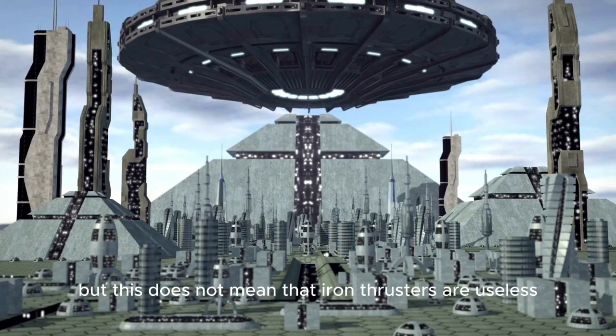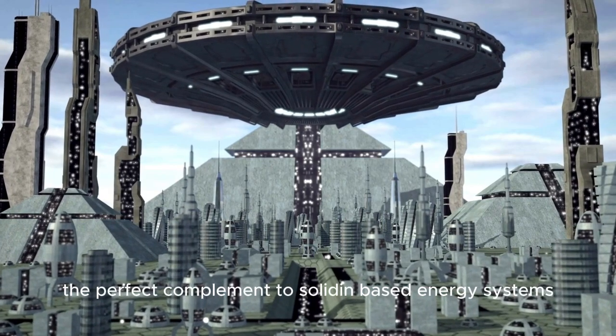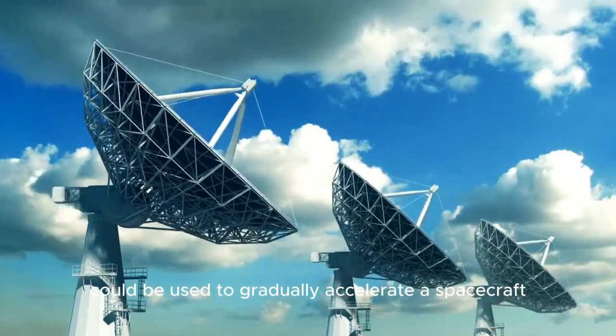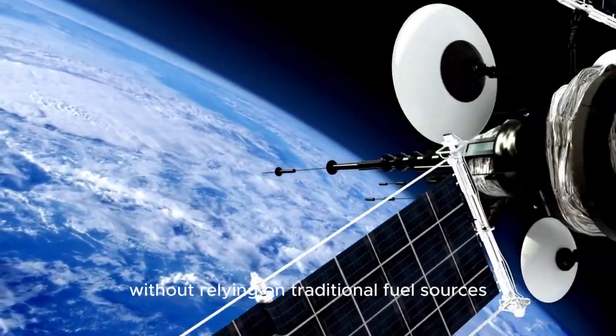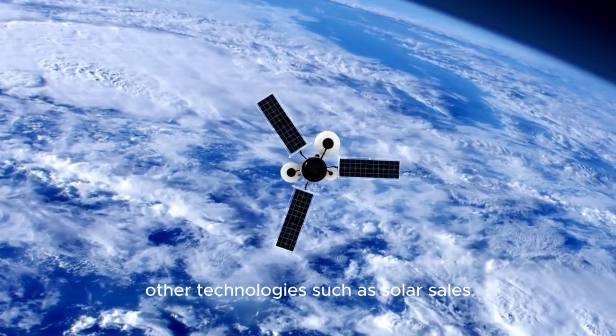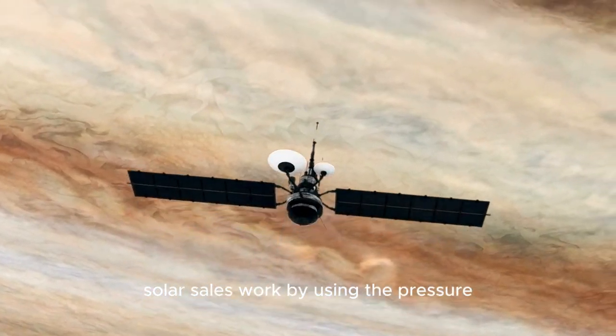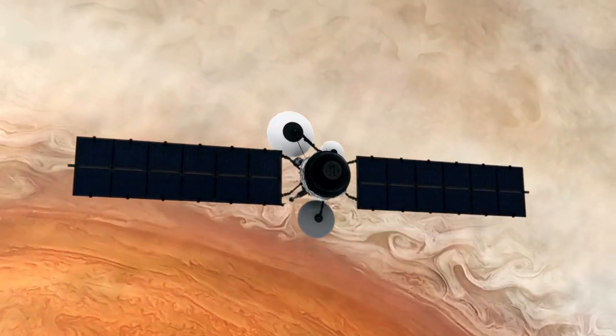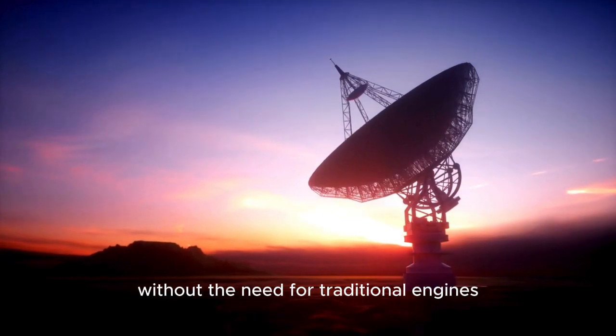But this does not mean that ion thrusters are useless in the context of warp drive. In fact, they may be the perfect complement to soliton-based energy systems. Ion thrusters could be used to gradually accelerate a spacecraft once a warp bubble has been created, allowing for steady, sustained travel across vast distances without relying on traditional fuel sources. In addition to ion thrusters, other technologies such as solar sails could also play a role in the future of space propulsion. Solar sails work by using the pressure exerted by light particles, photons, to propel a spacecraft forward.